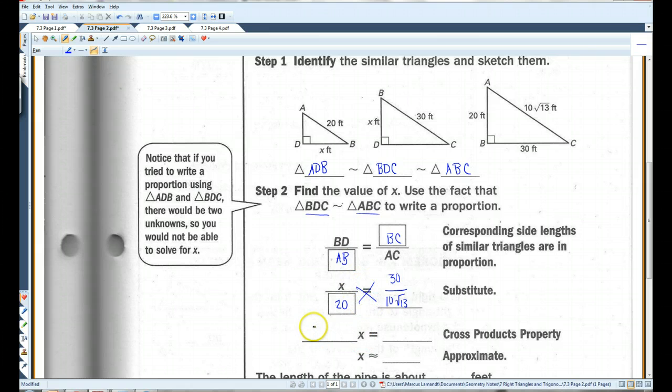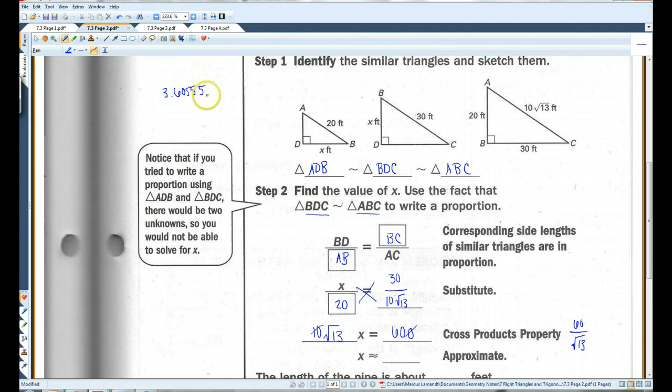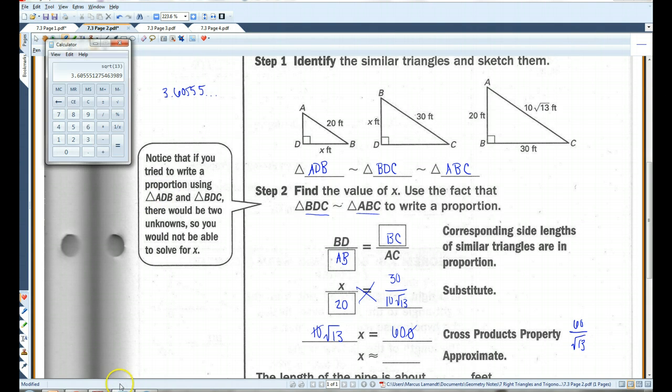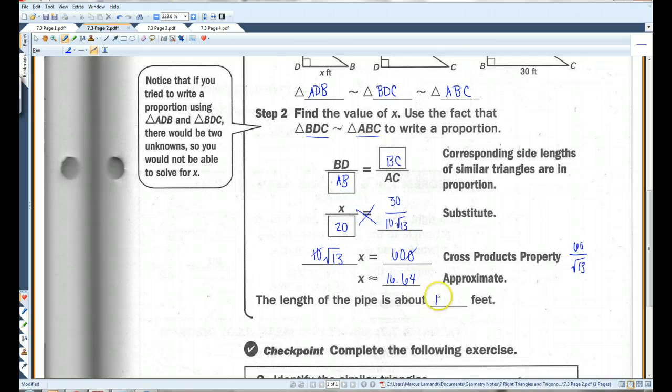I'm going to cross multiply. I've got 10 root 13X equals 600. I'm going to divide both sides by 10 root 13. 60 divided by root 13. I'm going to use a calculator. Square root of 13 is 3.60555-ish. 60 divided by 3.60555, close enough. 16.64. X is approximately 16.64. The length of the pipe is about 16.64 feet.